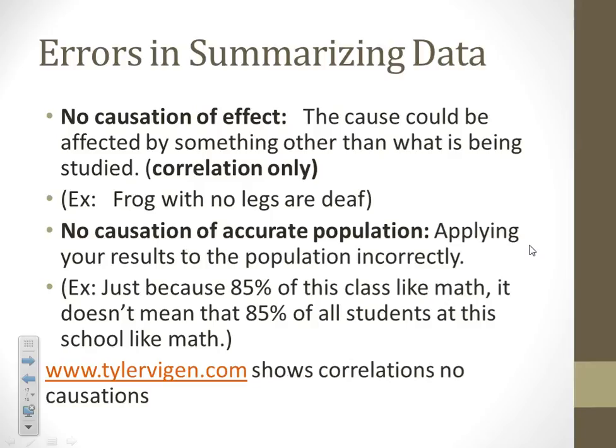This one really gets people, and it's something you need to be aware of when reading about studies and results: applying results to the population incorrectly. Just because 85% of the people in this class like math, it doesn't mean that 85% of all students in the school like math. You cannot apply results from a smaller population to a larger population unless your sample came from that larger population. If you took kids from every class and 85% said yes, then you could apply that to the whole school — but if your sample came only from one class, you cannot.